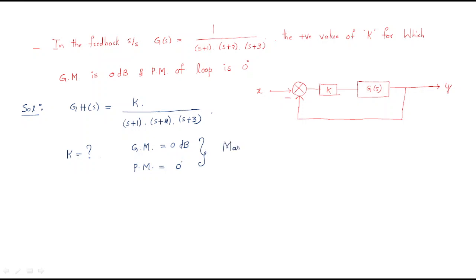Whenever gain margin is 0 dB and phase margin is 0 degrees, the system is called a marginally stable system. Using that stability condition, we can find the value very easily. For this purpose, I will find out the characteristic equation: 1 + G(s)·H(s) = 0.